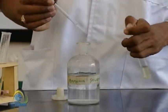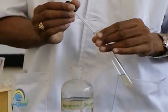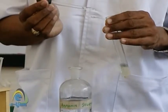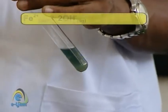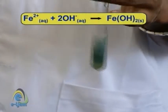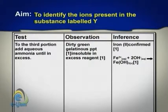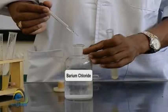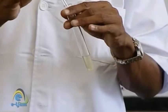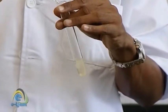Test: to the third portion, add aqueous ammonia until in excess. Observation: dirty green gelatinous precipitate, insoluble in excess reagent. Inference: iron confirmed.